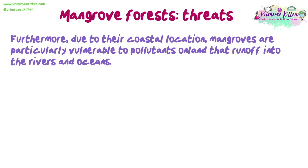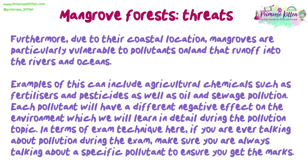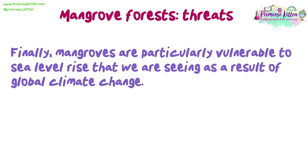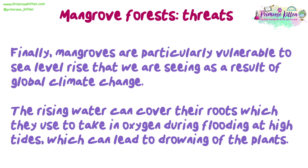Due to their coastal location, mangroves are particularly vulnerable to pollutants on land that run off into rivers and oceans. Examples include agricultural chemicals such as fertilisers and pesticides, as well as oil and sewage pollution. In exams, make sure you always refer to a specific pollutant to ensure you get the marks. Finally, mangroves are particularly vulnerable to sea level rise resulting from global climate change. The rising water can cover their roots, which they use to take in oxygen during flooding at high tides, and this can lead to drowning of the plants.